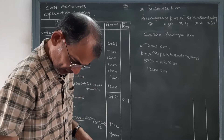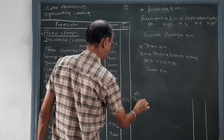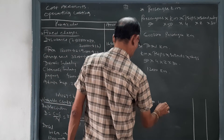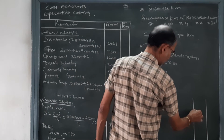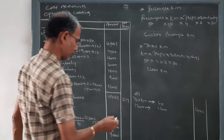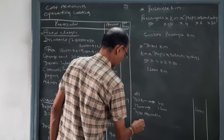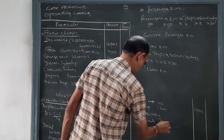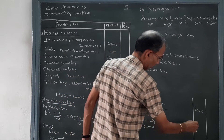Then oil: for 100 kilometers it is Rs. 100, so for 12,000 kilometers it will be 12,000 rupees. And lastly, tire allocation: for 100 kilometers it is Rs. 200, so for 12,000 kilometers it will be 24,000 rupees.